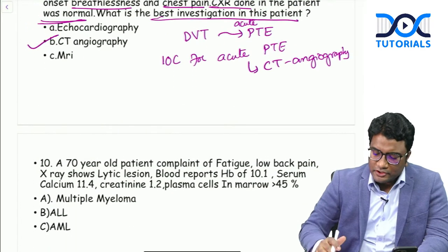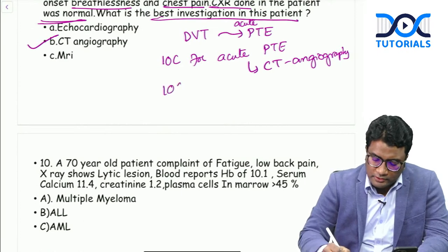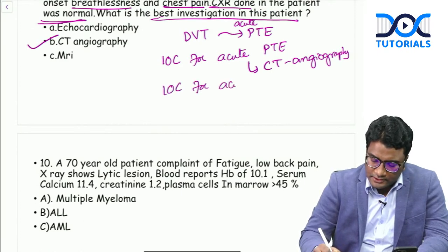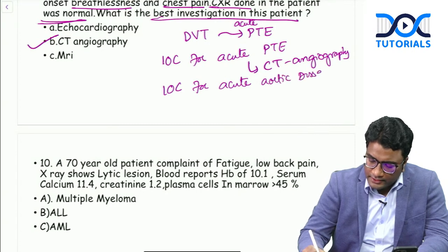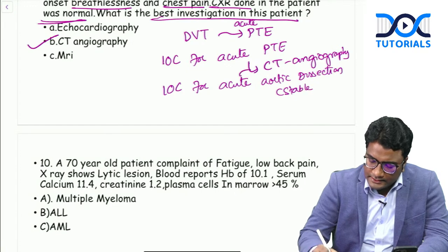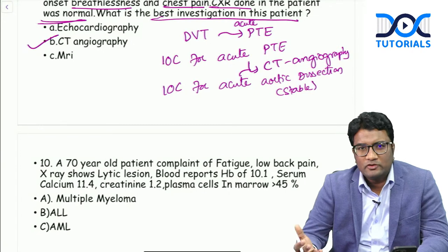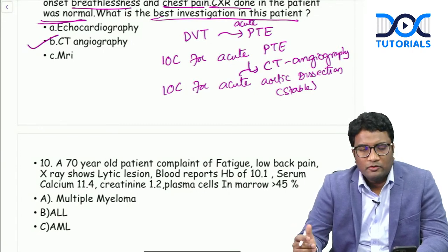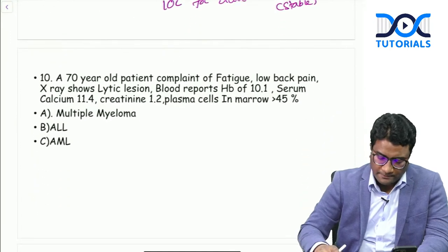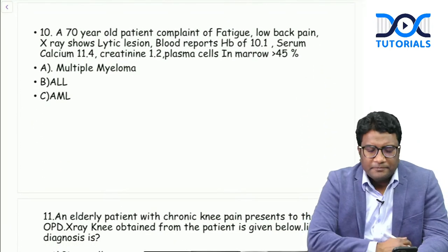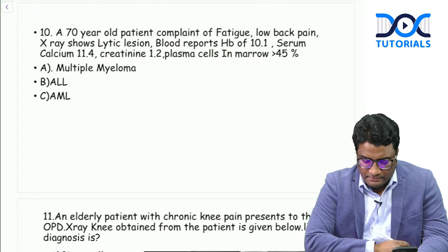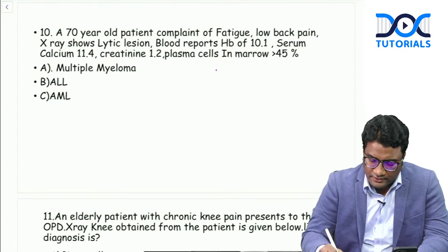Remember the investigation of choice for acute pulmonary thromboembolism and also for acute aortic dissection. For acute aortic dissection in stable patients, we go for CT angiography. For unstable patients, we use transesophageal echocardiography. But for stable patients with acute aortic dissection, CT angiography is the answer.